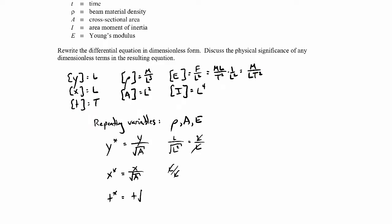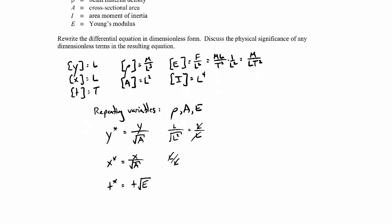Multiplying by the square root of E will give time times mass to the one-half times length to the one-half over time, so the t's will cancel out. Then to get rid of the mass I'll want to divide through by the square root of the density.